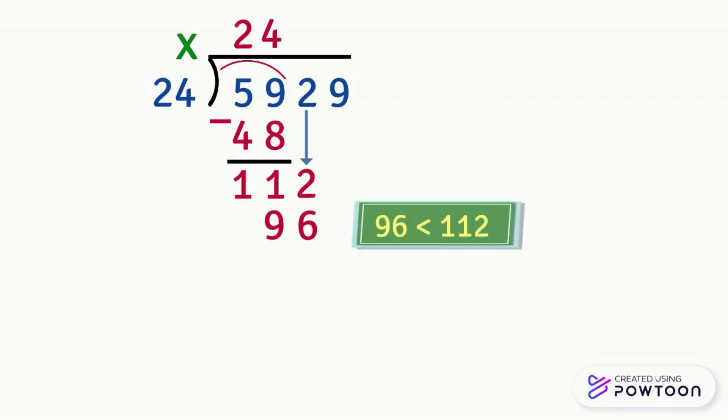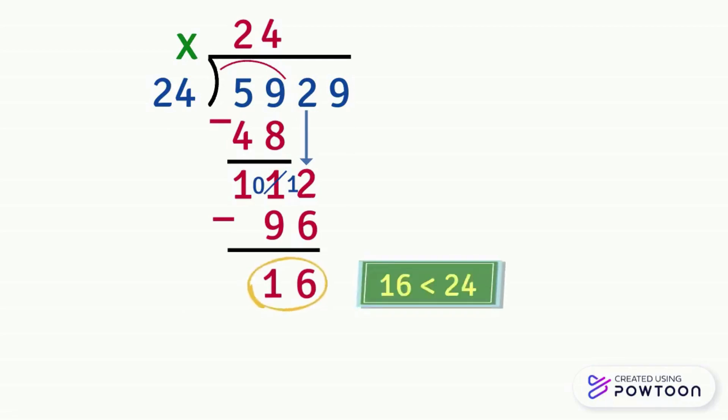96 is less than 112. So now we can subtract. 112 minus 96. 2 minus 6 is impossible. So we cross out the 1 and you write 0 and you put 1 next to 2 which will be 12. 12 minus 6 equals 6. Now 10 minus 9 equals 1. So 112 minus 96 equals 16. 16 is less than 24 but we still have a digit to bring it down. So we can continue our division.